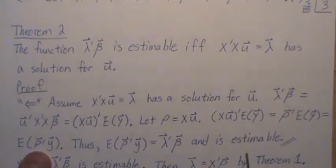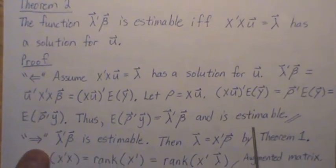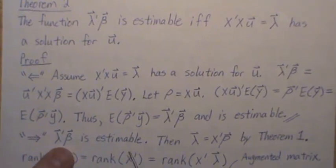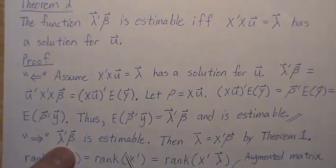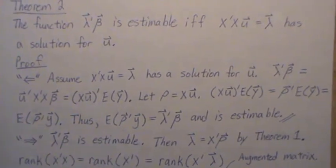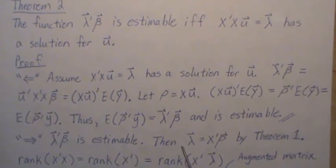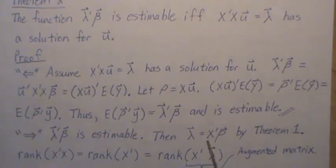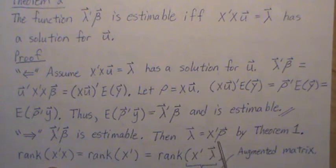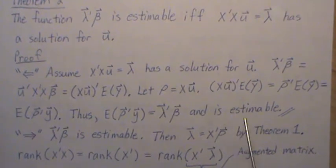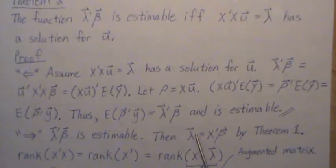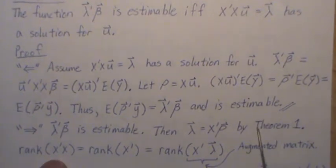Now let's go the other way: assume lambda transpose beta is estimable. Then we know by Theorem 1 that lambda can be represented as rho transpose x — in Theorem 1 we put the transpose around everything, but this is the same.